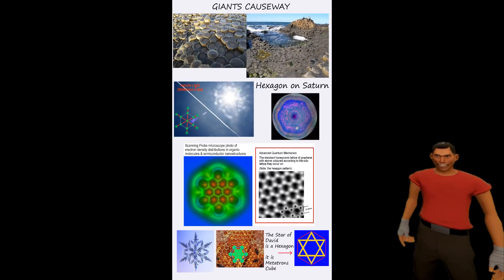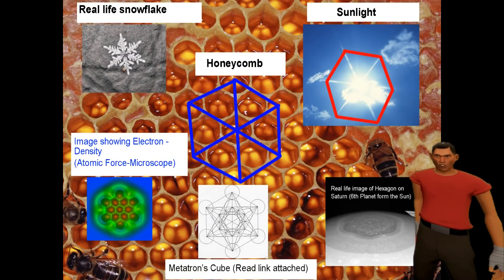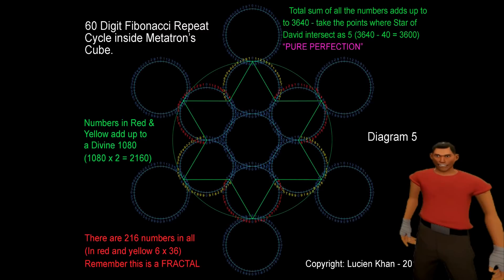But more importantly, this hexagonal pattern appears everywhere in nature. Incredibly, if we create Metatron's cube using the Fibonacci 60 digit cipher, as seen here, this pattern starts to generate a 216 digit matrix.